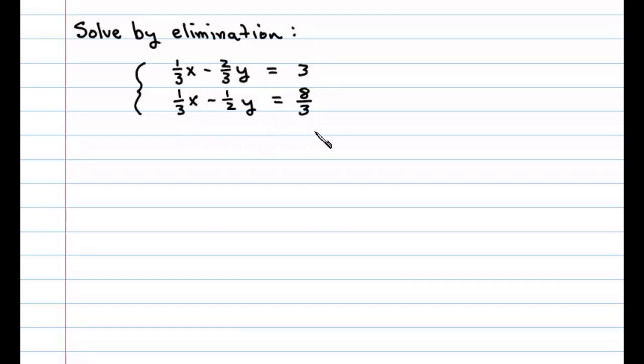Here we're asked to solve a linear system by elimination. Let's begin by clearing the fractions. We know we can do that if we multiply both sides of the equation by its LCD. In this case, we'll multiply the first equation, both sides by 3.